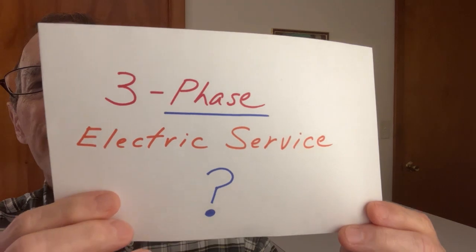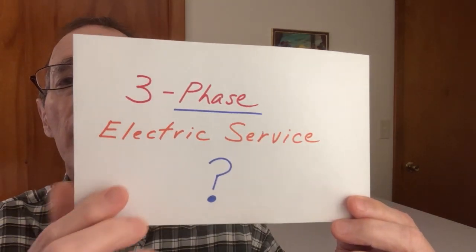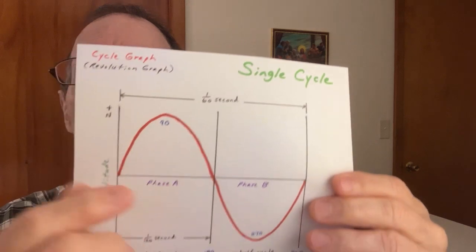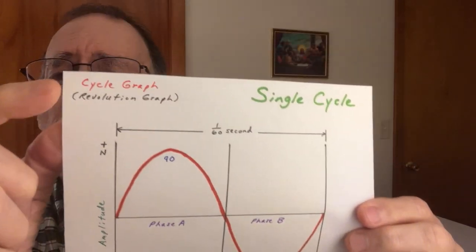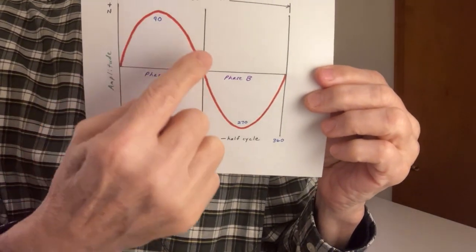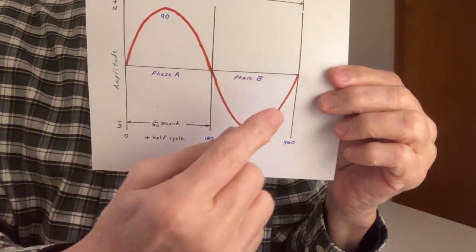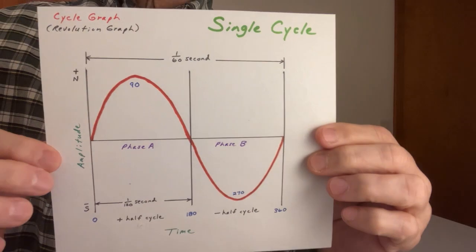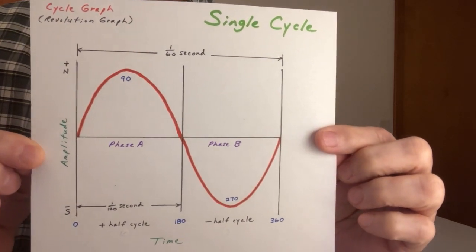Okay, let's move forward. Three phase electric service - is there such a thing? I do not think so. I showed clearly in previous videos that single phase service is actually single cycle. You have one cycle you see in your cycle graph or revolution graph - this is one revolution of a generator inside. You could say you have two phases, A and B, but it's still a single cycle. We talked about that, no need to go on and on.